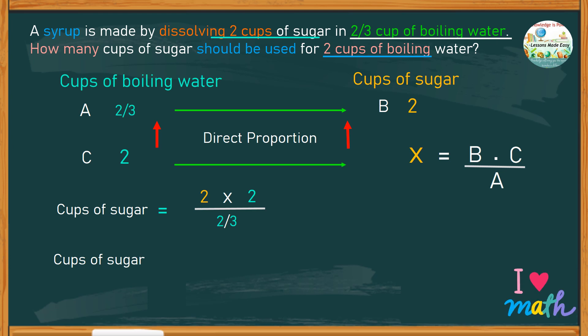To find the number of cups of sugar, we can simplify this number sentence. We have 2 times 2, which is 4, divided by 2 thirds.